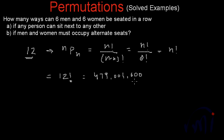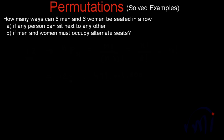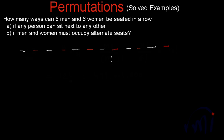Now let's go to the second part of the problem. The second part asks us to find the number of ways in which men and women can occupy only alternate seats. That means if these are the six places which can be occupied by men, then these will be the six places which can be occupied by women. So the six men have to occupy the white places, and the six women have to occupy the red places.